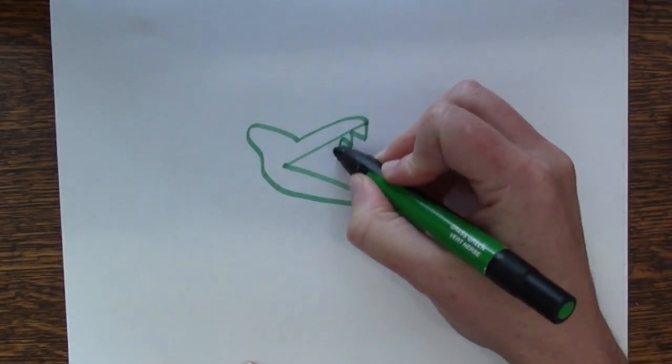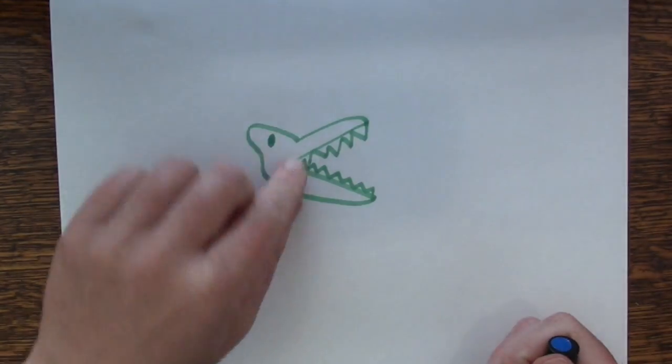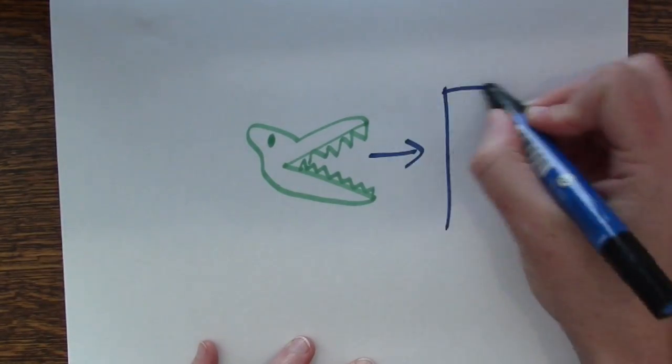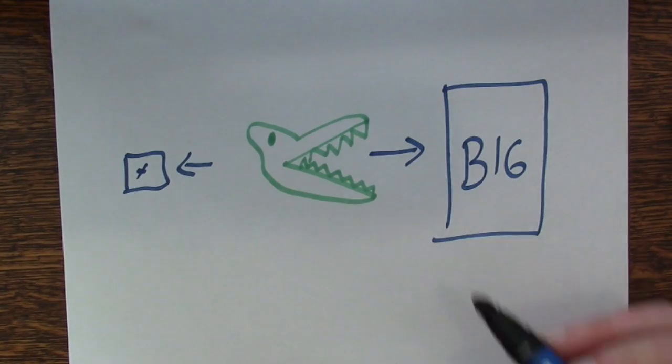I'm going to first introduce you to my buddy Greater Gator. He's an alligator and he loves to eat. He has a very big mouth and he loves to eat the bigger numbers. He doesn't really care too much about the little numbers.